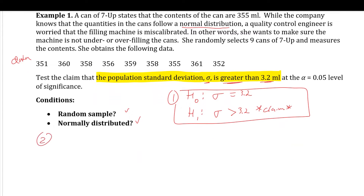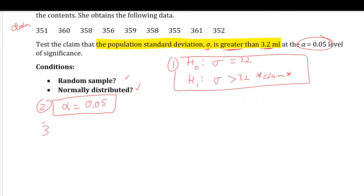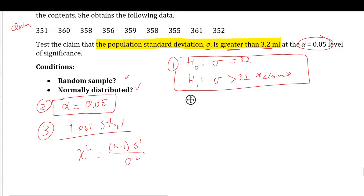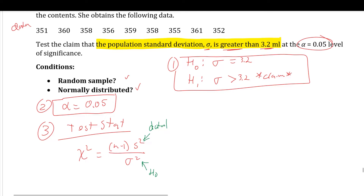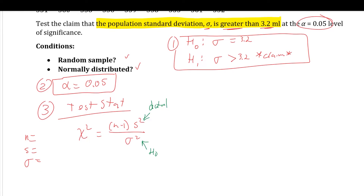Step two: identify our significance level, which in this case is 0.05. Step three: compute our test statistic. For a test on a population standard deviation, the chi-squared test statistic is (n − 1) times the sample standard deviation squared, divided by sigma squared. This value comes from the data and sigma comes from the null hypothesis. We need the sample size n = 9, the sample standard deviation s, and the population standard deviation sigma = 3.2 from the null hypothesis.